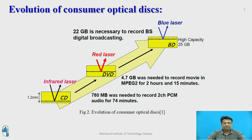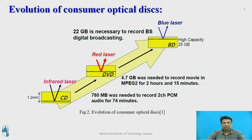Next, the DVD player was invented. The DVD player uses a red laser to read information. The maximum capacity of a DVD is 4.7 GB, which is enough to record a movie in MPEG-2 for up to a maximum of 2 hours and 15 minutes. Then the Blu-ray Disc was invented. The Blu-ray Disc operates on a blue laser and has a capacity of 22 GB, used for recording digital broadcasting.